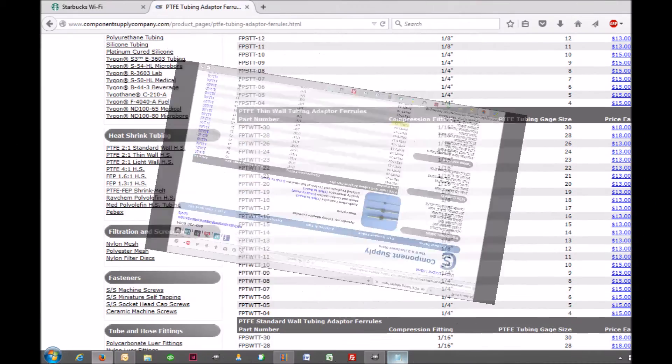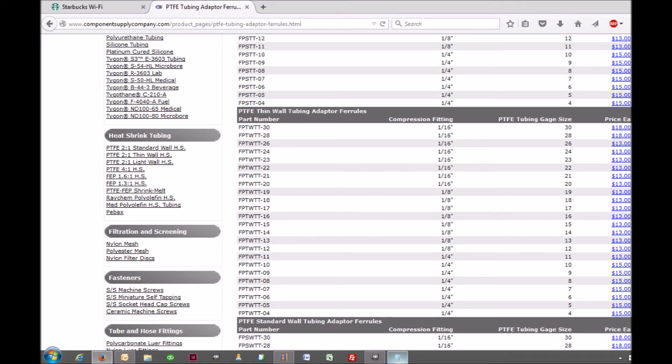If I was working with a different gauge size, I would need to determine the appropriate ferrule size and accompanying compression fitting. For example, to incorporate 20 gauge thin wall PTFE tubing, I would need to use a one-sixteenth inch compression fitting. Therefore, the part number of the ferrule I would need would be FPT-WTT-20.